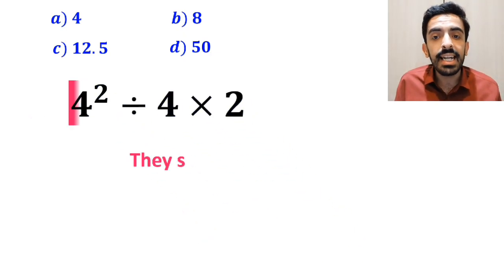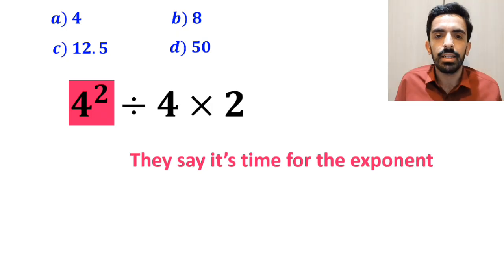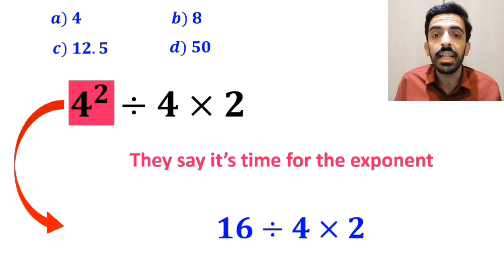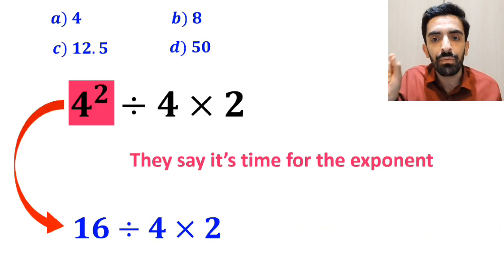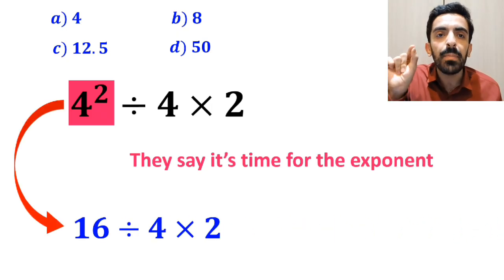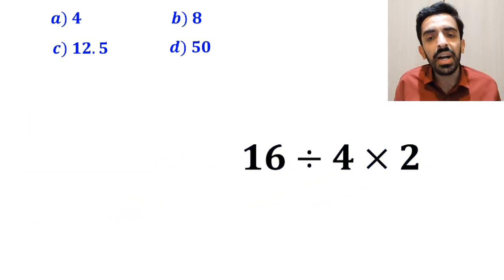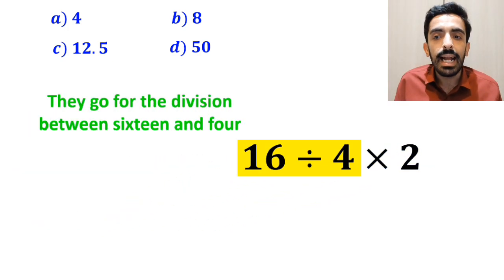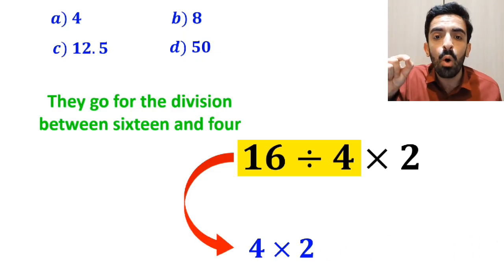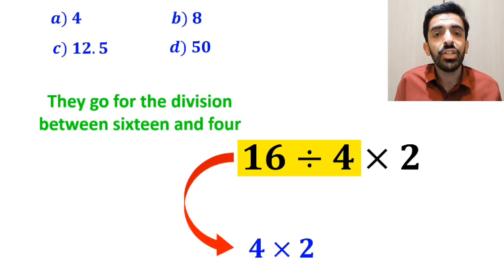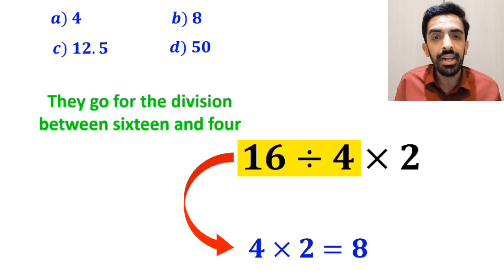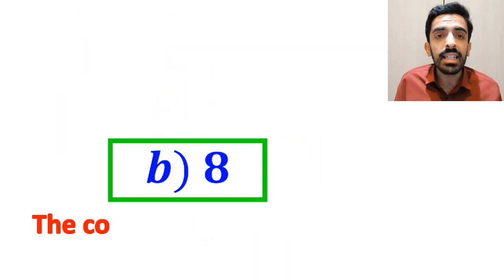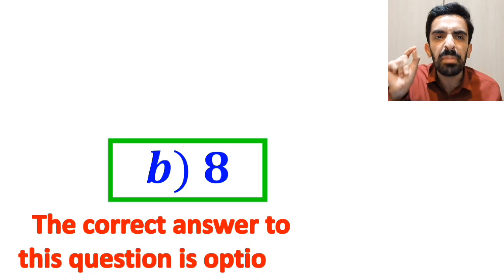Then they say it's time for the exponent, and instead of this expression, they write 16 divided by 4 then multiplied by 2. In the final step, they go for the division between 16 and 4, simplifying to 4 multiplied by 2, which finally gives them the answer 8. Without any hesitation, they quickly say that the correct answer is option B.